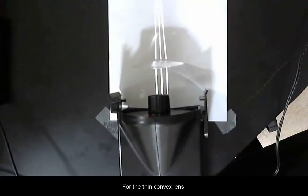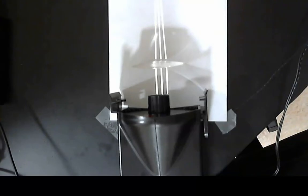For the thin convex lens, make sure to carefully trace both sides of the lens surfaces.